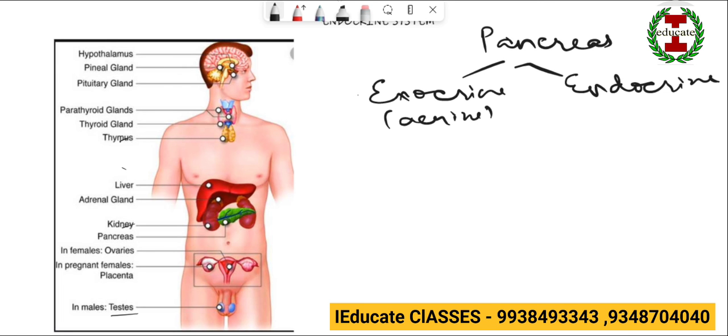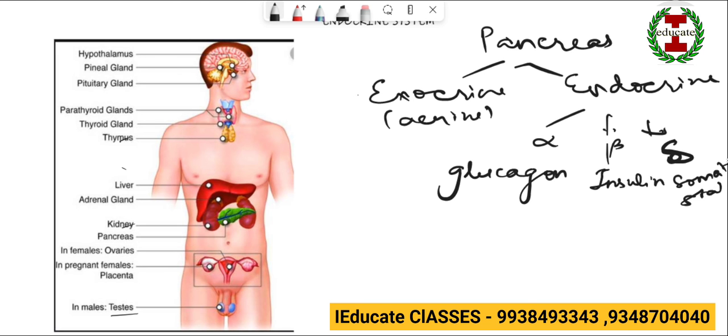Whereas the endocrine part of the pancreas comprises of alpha cell, beta cell and delta cells. So alpha cell produces glucagon, beta cell produces insulin, and the delta cell produces somatostatin, which is better known as the growth hormone inhibiting hormone that inhibits the production of growth hormone or somatotropin produced by the pituitary gland.